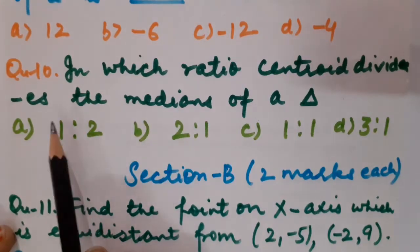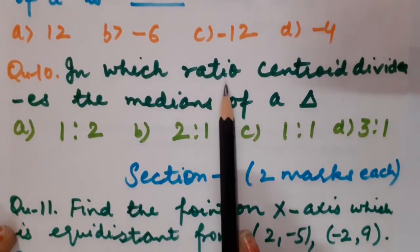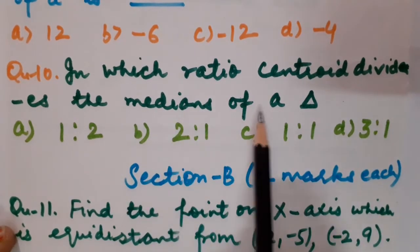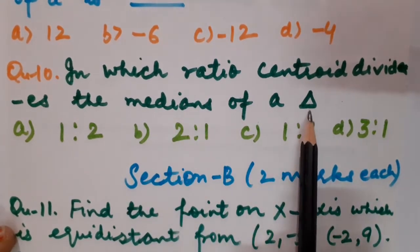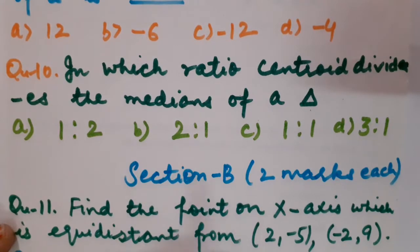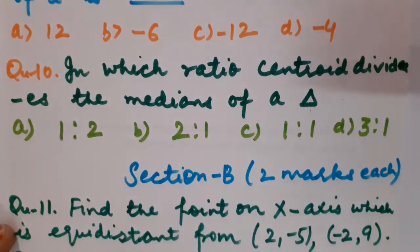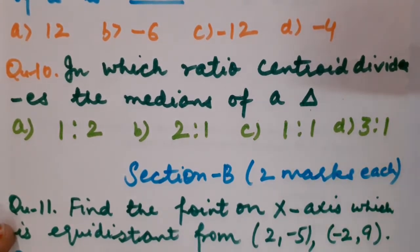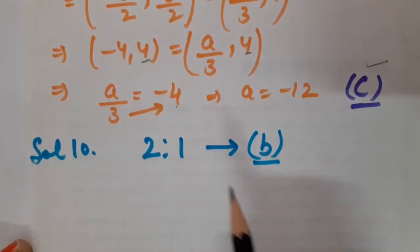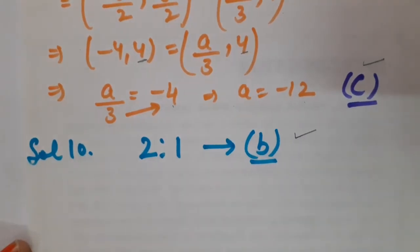This is the last MCQ. In which ratio does a centroid divide the median of the triangle? The centroid divides all 3 medians of a triangle in the ratio 2:1. So the answer is 2:1, meaning option number B is the right option.